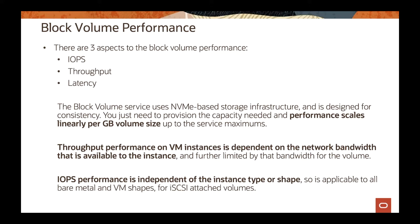When you attach a block volume to an instance, there are two types of attachment: iSCSI or paravirtualized. iSCSI usually gets better performance, especially when using a bare metal server. Paravirtualized gives you flexibility in how the device is presented to the operating system — for example, you can select a device path name that will automatically show up persistently. With iSCSI, you do have to execute the iSCSI commands inside the operating system to get access to the device.